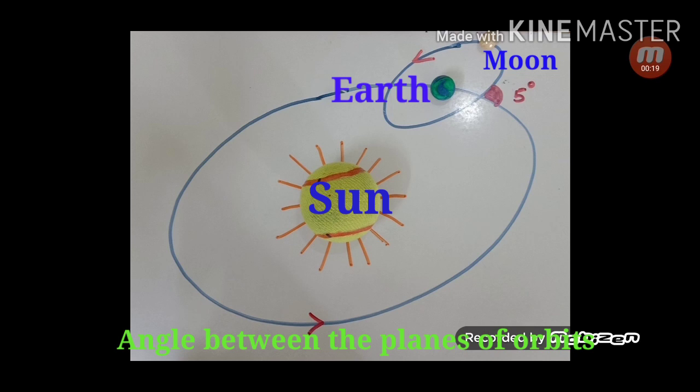As a result, the Moon intersects the plane of the Earth's orbit twice during one revolution.